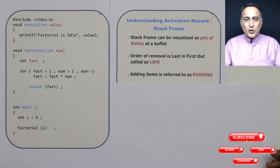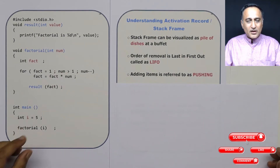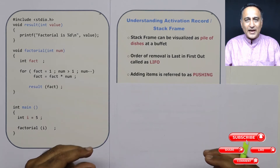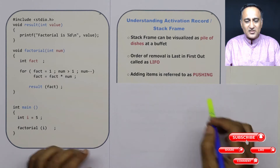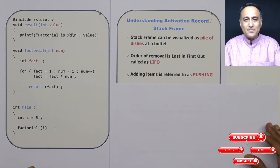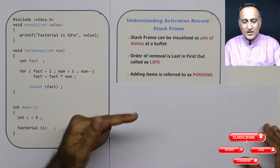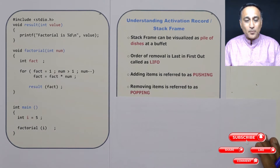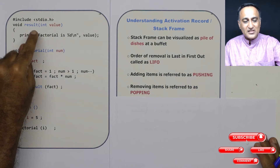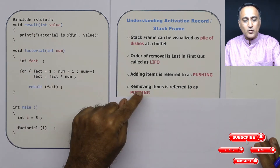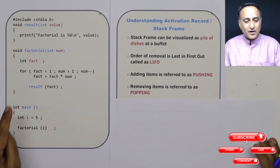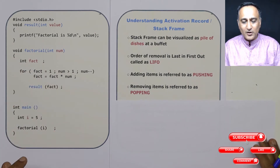When main was called, we pushed — that is, added — a data frame or activation record to the stack box. Adding an item to the stack is known as pushing. Removing an item from a stack is known as popping. When result finished execution, we popped out the activation record of result. When factorial finished executing, we popped out the activation record of factorial.